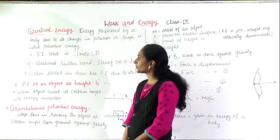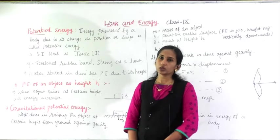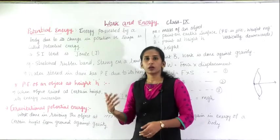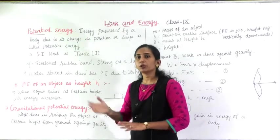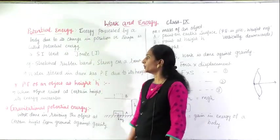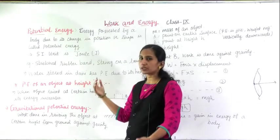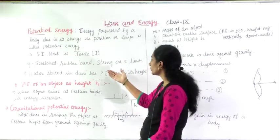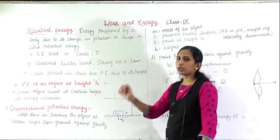The water falls from a height, so the body has greater energy — water has greater energy. And the water which is flowing in a slope has less energy. The SI unit of potential energy is joule. Energy unit is joule — for kinetic energy the unit is joule, potential energy is also joule.